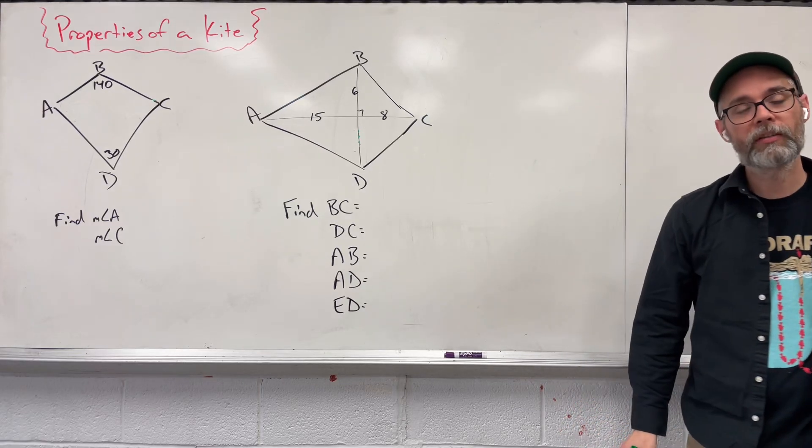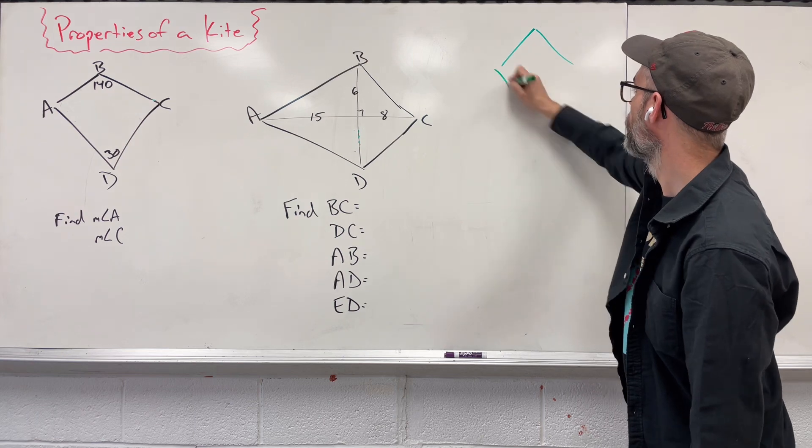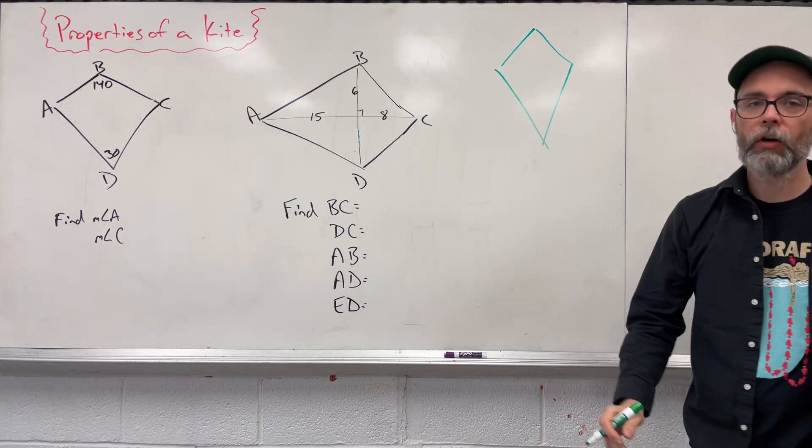Hi, today we're going to take a look at the properties of a kite. A kite is a four-sided figure. That four-sided figure is called a quadrilateral.